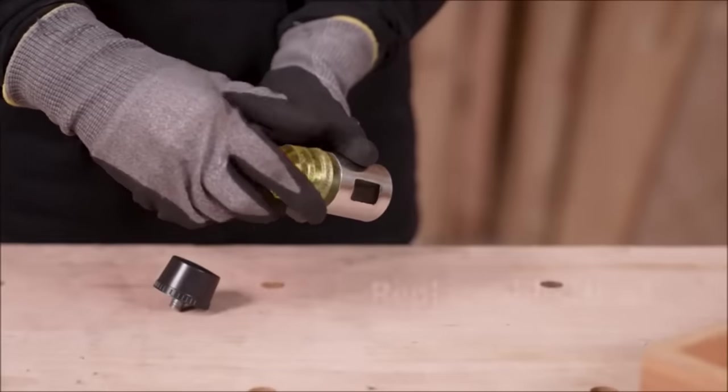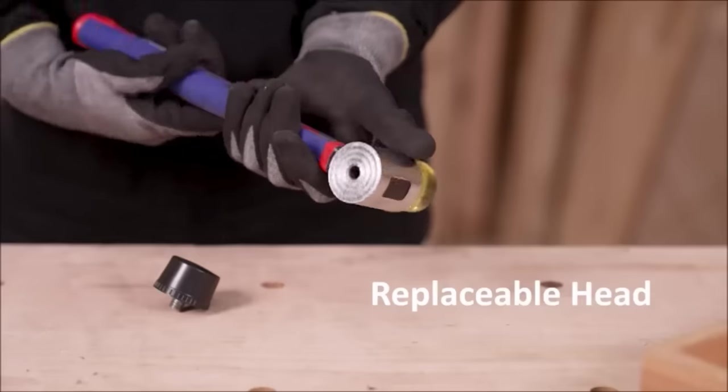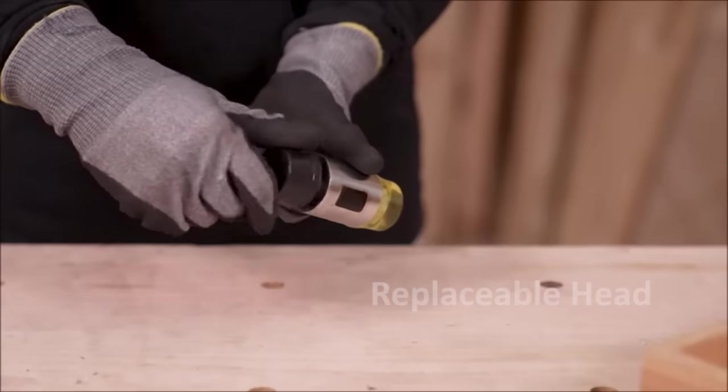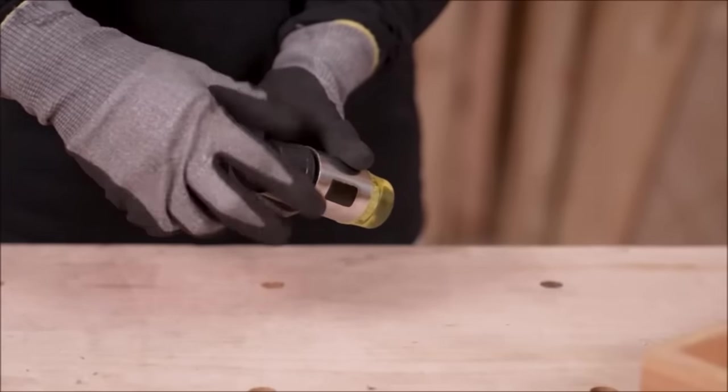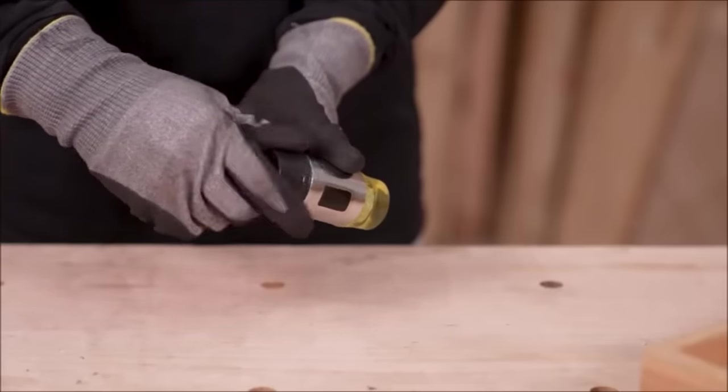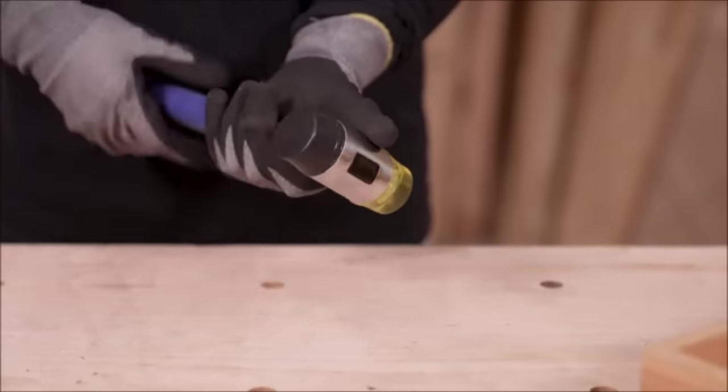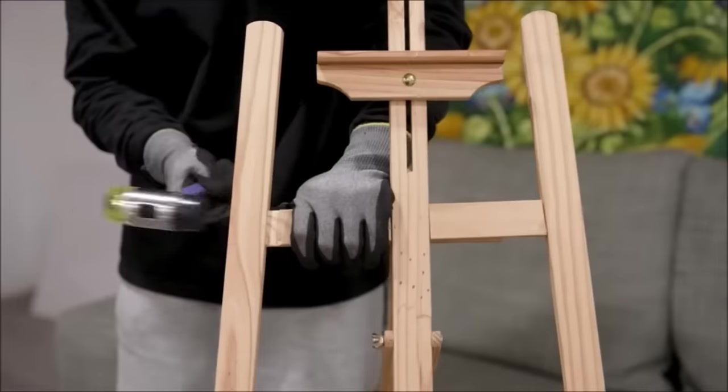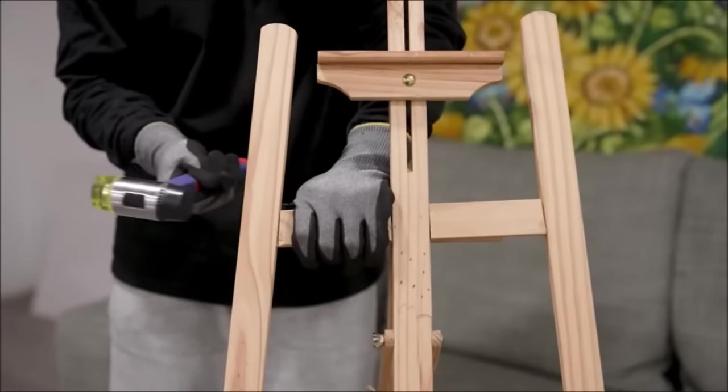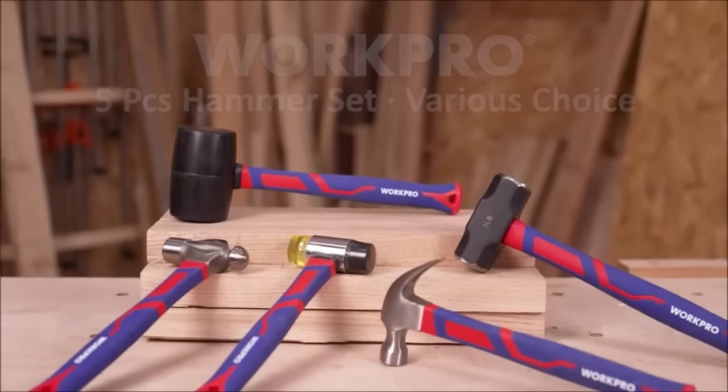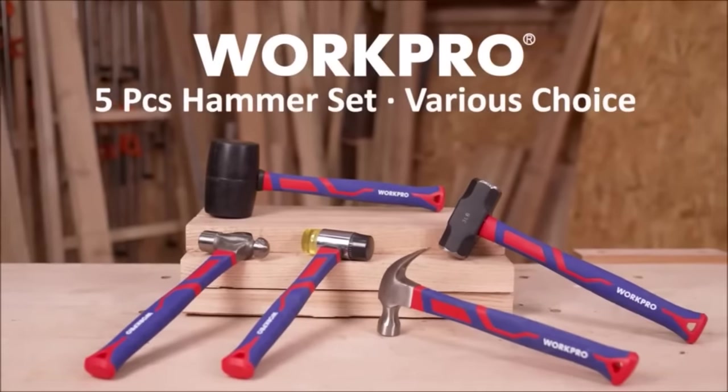Also included are a 16-ounce ball peen hammer for metalworking, and a 22-ounce double-faced mallet that handles tasks like driving nails, setting rivets, and furniture assembly. Each hammer boasts forged and polished steel heads for durability and longevity, while the sturdy fiberglass handles ensure a secure grip. This set is a great investment for a wide range of projects.